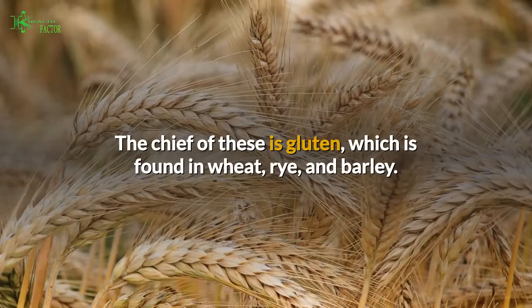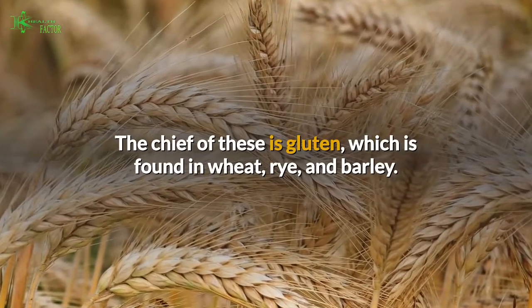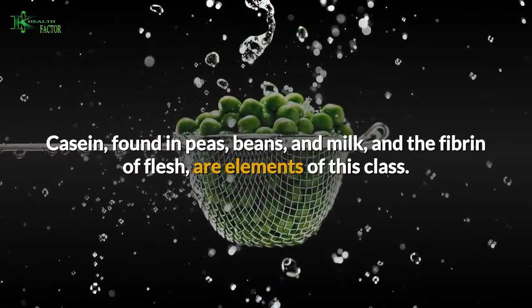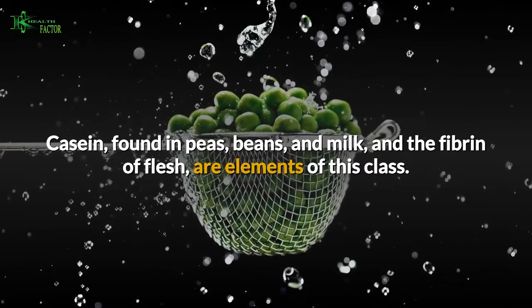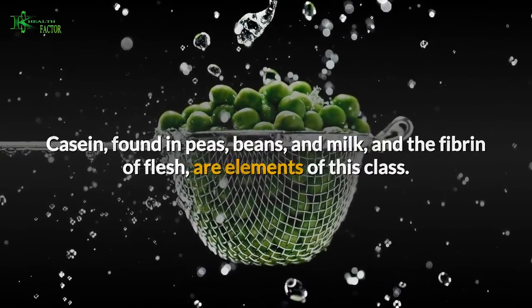The chief of these is gluten, which is found in wheat, rye, and barley. Casein, found in peas, beans, and milk, and the fibrin of flesh, are elements of this class.